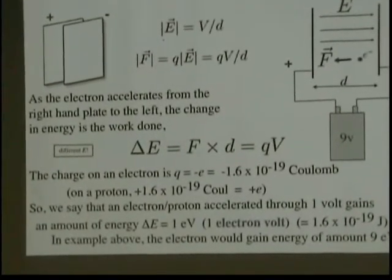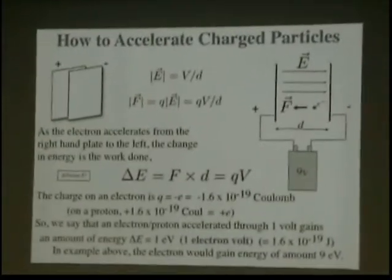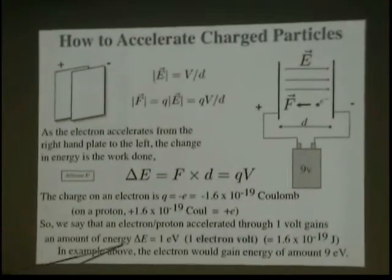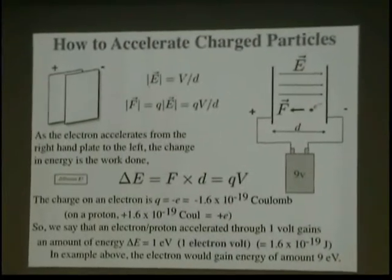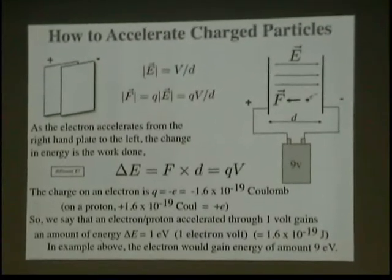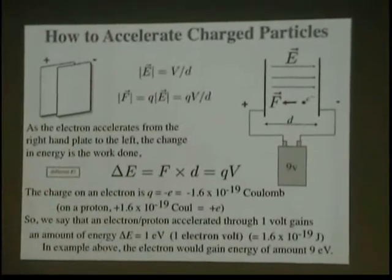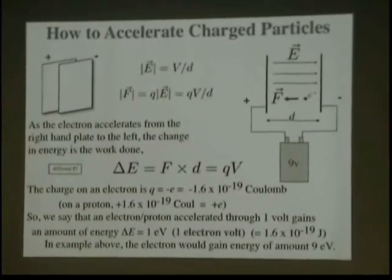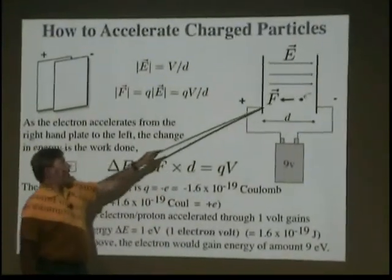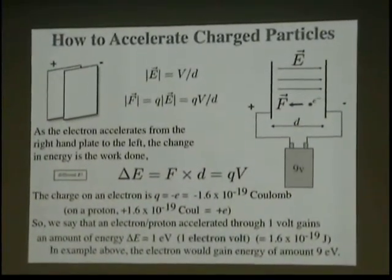You know the charge on an electron. That's a given. It is 1.6 times 10 to the minus 19th Coulomb on proton. It's just reversed. So, we can say that an electron or a proton accelerated through one volt gains the amount of energy equal to one electron volt. That's the standard measure of energy that we use in the accelerator, actually in the physics world. Go back to MKS units, one electron volt equals 1.6 times 10 to the minus 19 joules. And in the example above, we have a 9 volt battery connected to these plates. The electron is getting accelerated from one plate to the other, so we can say that our electron gains 9 electron volts in that case.